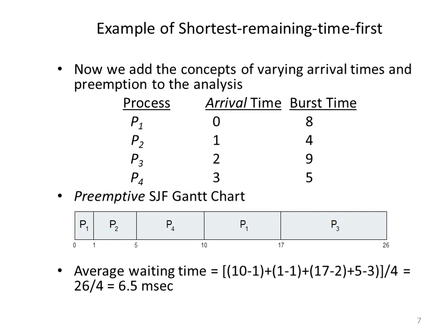The preemptive version of the shortest job first algorithm is also known as the shortest remaining time first algorithm. We add the concept of varying arrival times of different processes because we need this information to preempt the processes. In slide number 7, with 4 processes, arrival times and burst times are shown. At time 0, P1 is the only process available in the ready queue, so CPU is allocated to it. When CPU completes one cycle, P2 arrives with a burst cycle of 4 ms, whereas the remaining burst cycle of P1 is 7 ms, so P2 is allocated with the CPU first.